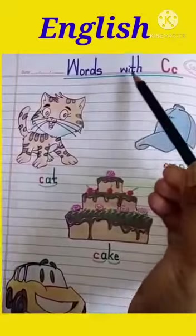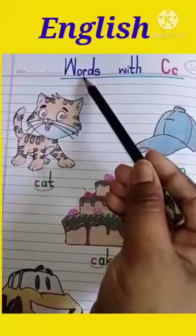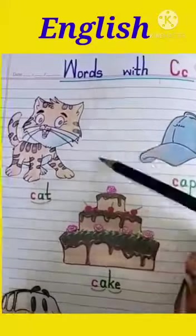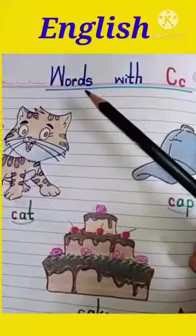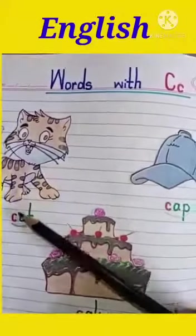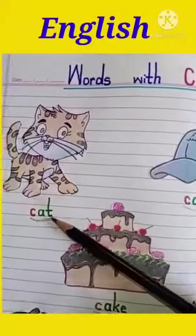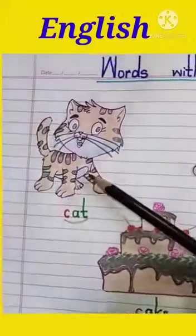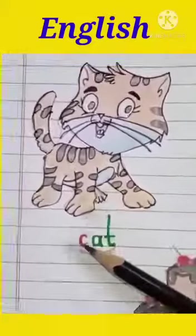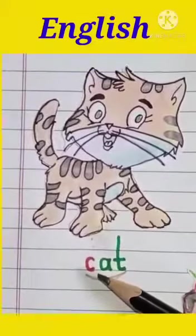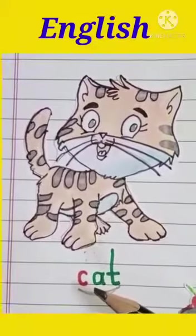Words with C. W-O-R-D-S. Words means Shag. C-A-T. Cat. Cat means Willi. Cat sounds Mew.